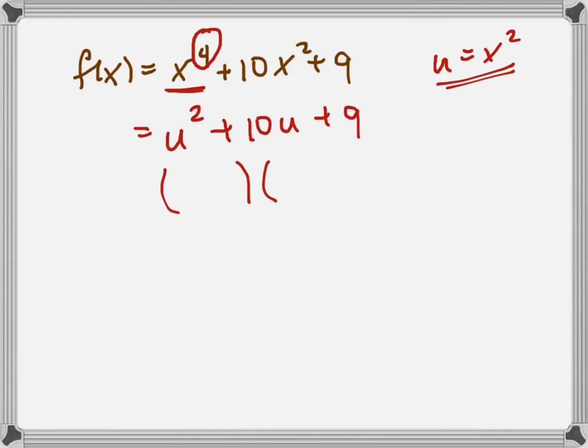And then when I do that I can say, oh yeah, that's easy. This is just u plus 9, u minus 9. Whoops. U plus 9 and u plus 1. Sorry about that. U plus 9, u plus 1. Right?